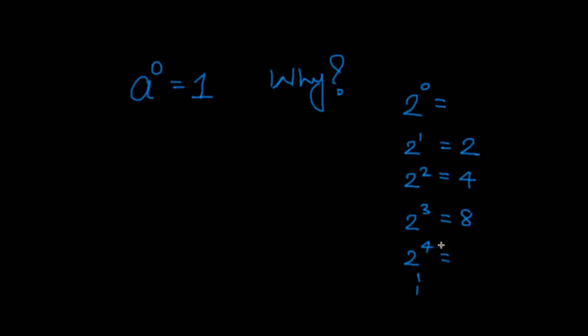What is 2 to the power 4? Nothing but multiplying 2 four times. 2 multiplied by 2 and again multiplied by 2 and again multiplied by 2. So it's basically 16.